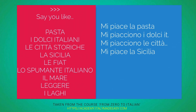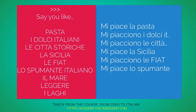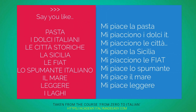Now you like le Fiat — Fiat cars. Mi piacciono le Fiat. So what if you like lo spumante italiano, Italian sparkling wine? Mi piace lo spumante. How about you like il mare? Mi piace il mare. How about I like to read? Mi piace leggere. And how about you like i laghi? Mi piacciono i laghi — I like lakes.